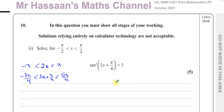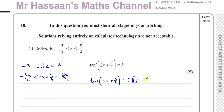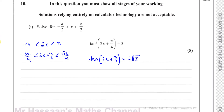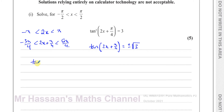We also have to be very careful here because we need to take the square root of both sides. That gives us tan(2x + π/4) = ±√3 — both the positive and negative square root. If we leave out one of them we'll lose some solutions. So we're going to have two branches: tan(2x + π/4) = √3, and tan(2x + π/4) = −√3.